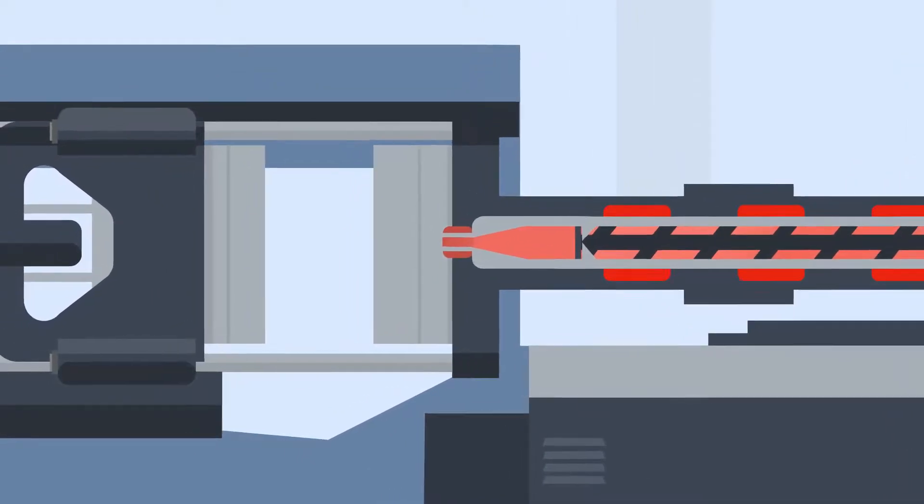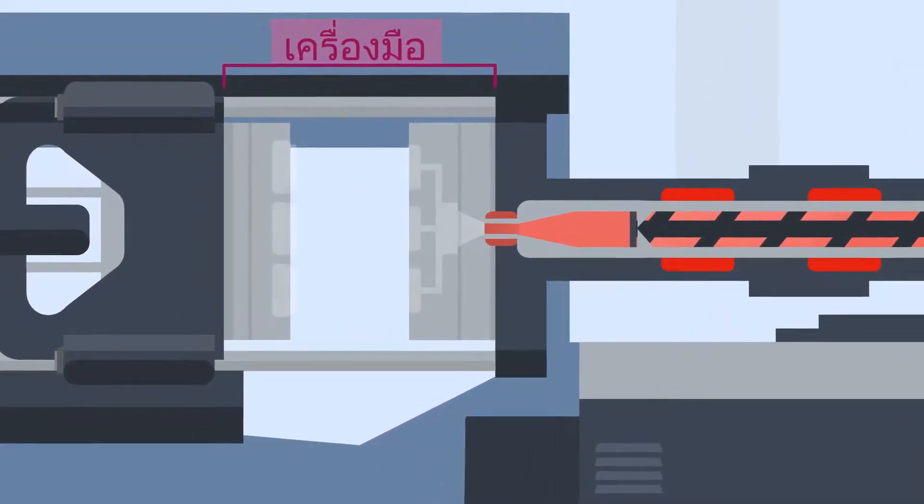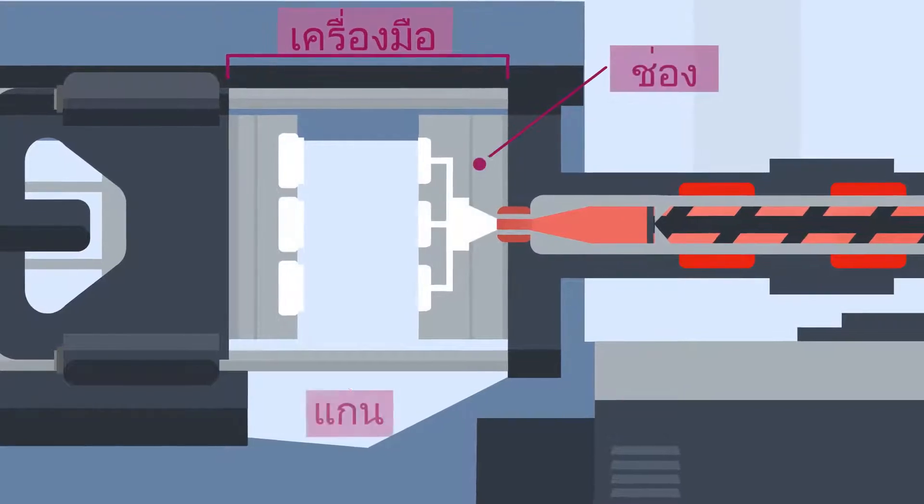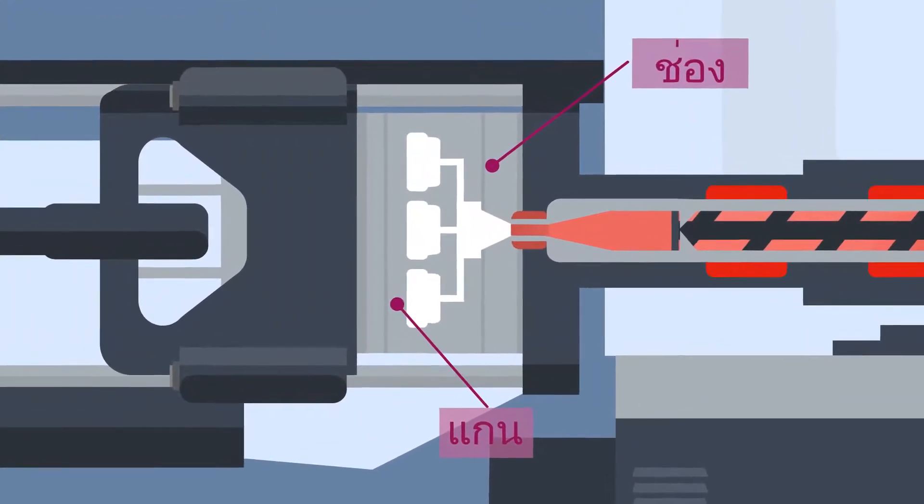Before the molten plastic is injected, the tool, which is usually made up of a fixed half called the cavity and a moving half called the core, closes.